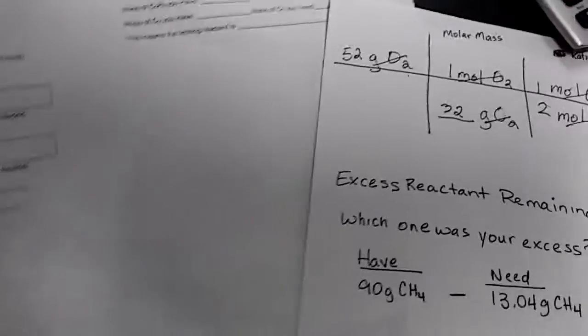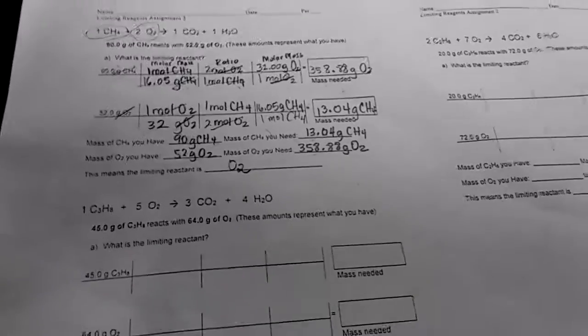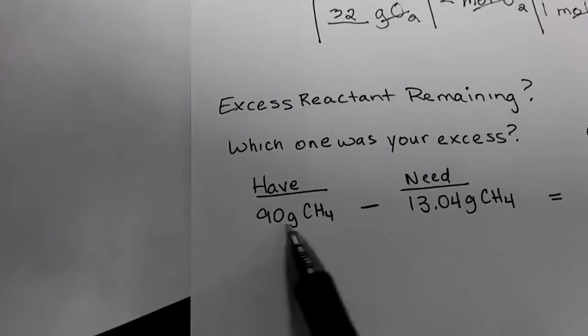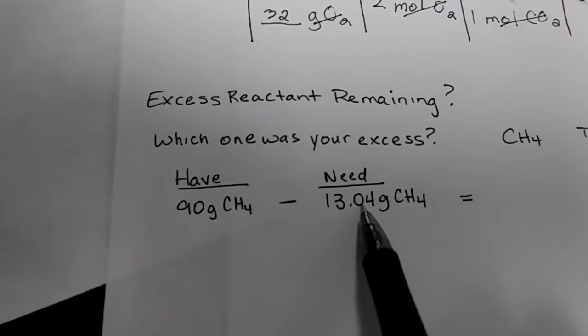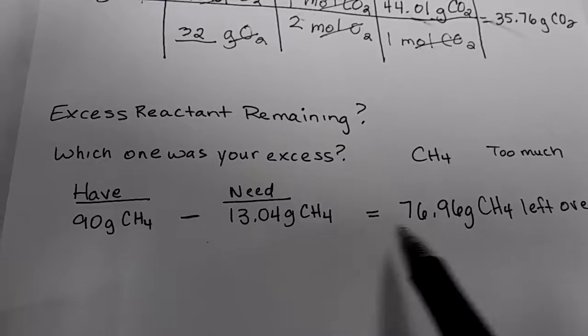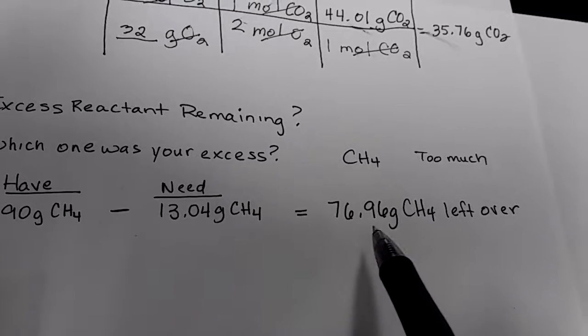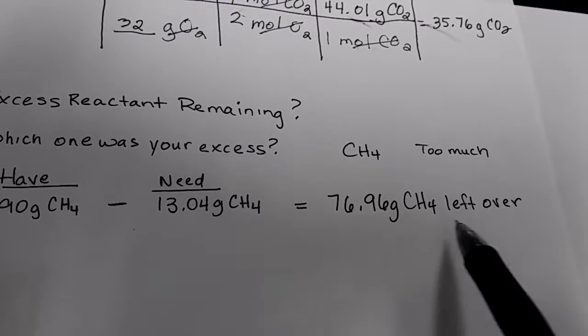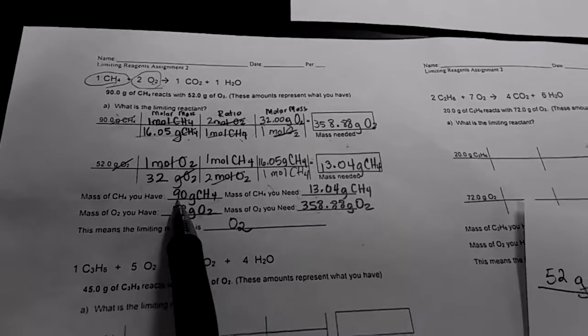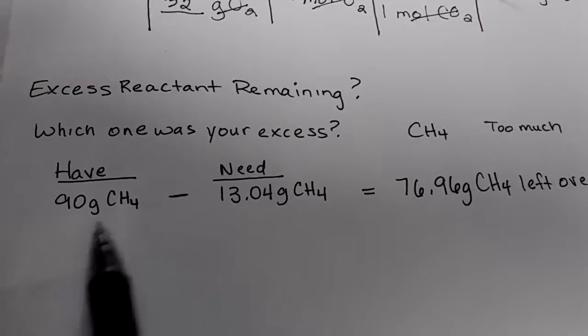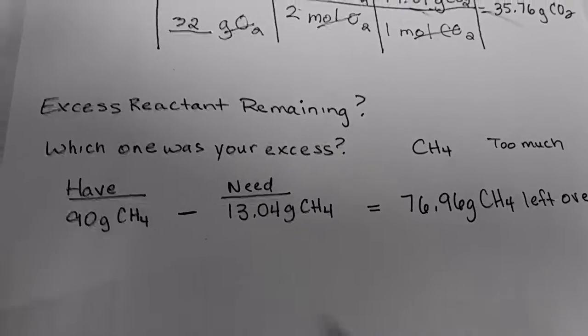And to figure out the excess, you're again using that information. So therefore, remember we had 90 grams of CH4. You subtract it from what we need, which is 13.04. So once you subtract, you know that you have 76.96 grams of CH4 left over. And that answers pretty much that part of the question. And you can also have seen it here from 90 minus 13.04, just writing this information again there. And that is all.